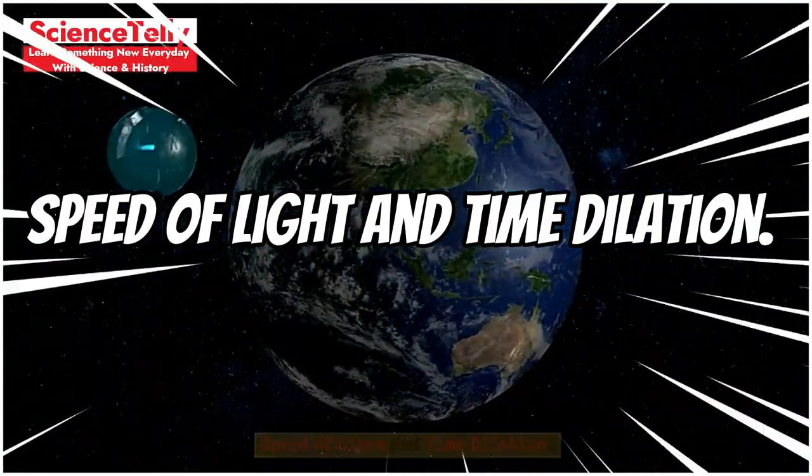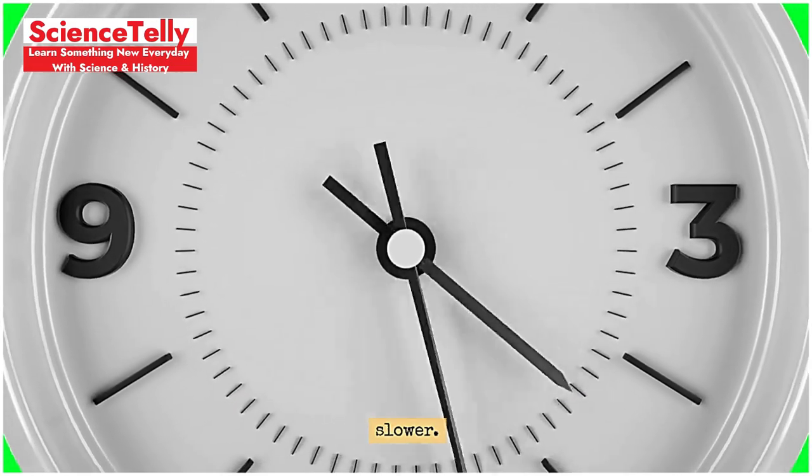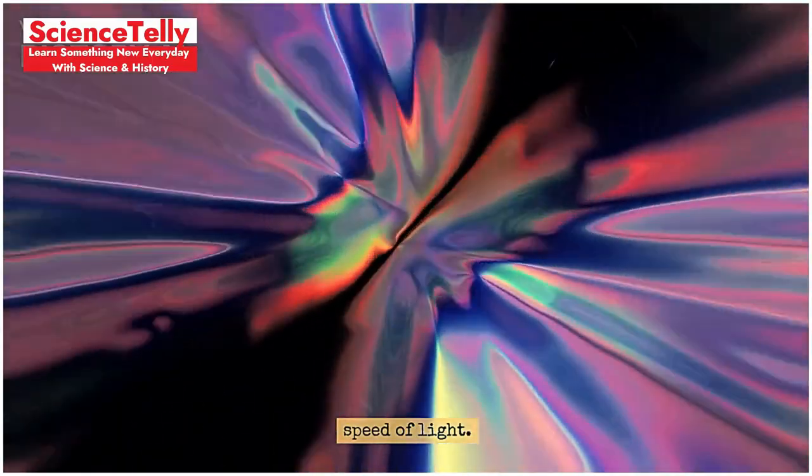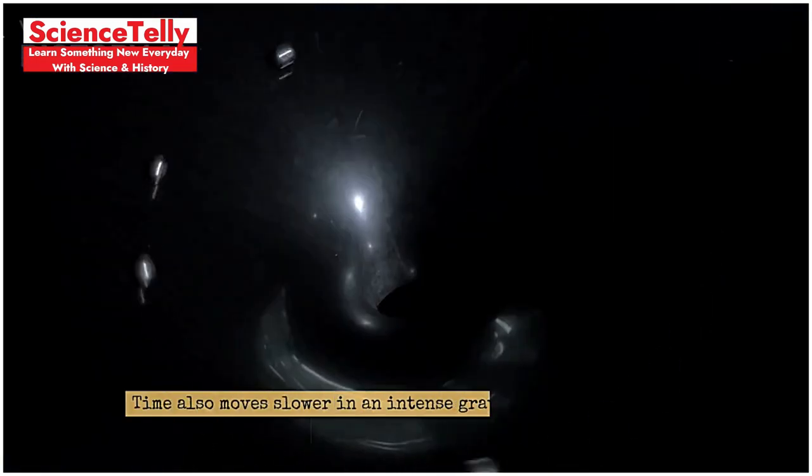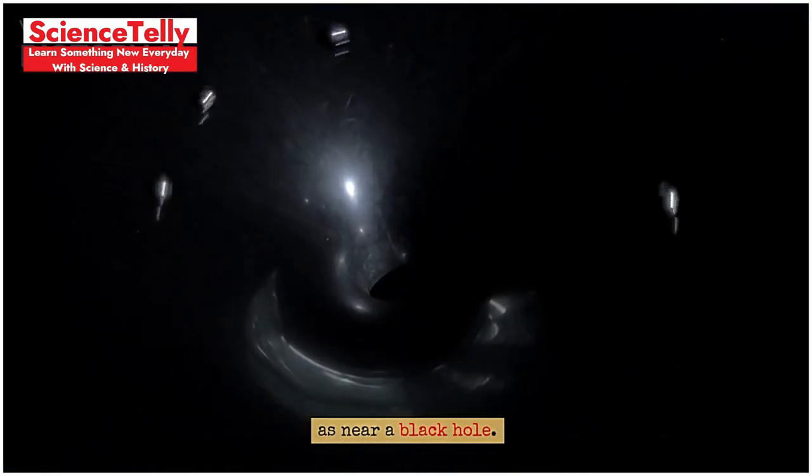Speed of Light and Time Dilation. One key outcome of relativity is that time can move faster or slower. For noticeable time dilation, you would need to travel at the speed of light. Time also moves slower in an intense gravitational field, such as near a black hole.